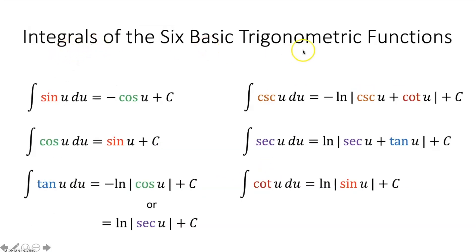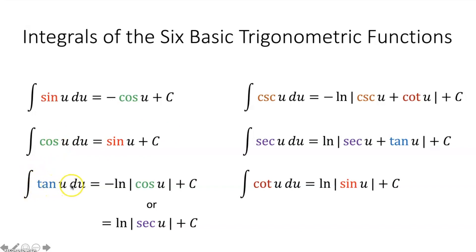Now let's look at the integrals of the six basic trig functions. The integral of sine of u du equals negative cosine of u plus c. The integral of cosine of u du equals sine of u plus c. The integral of tangent of u du equals the negative natural log of the absolute value of cosine of u plus c, or equivalently the natural log of the absolute value of secant of u plus c. You may be thinking — how can it equal both of these?